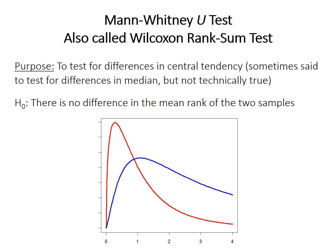The Mann-Whitney U-test, also called the Wilcoxon rank sum test, is designed to test for differences in central tendency for non-normal data. It's sometimes said to test for differences in the median, but that's not technically true. Its null hypothesis is that there is no difference in the mean rank of the two samples — and you'll see where the rank comes from in a moment.